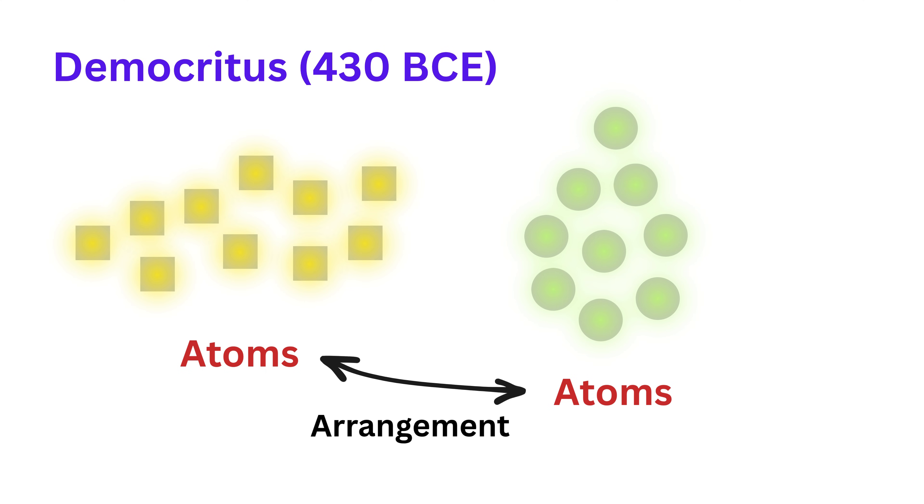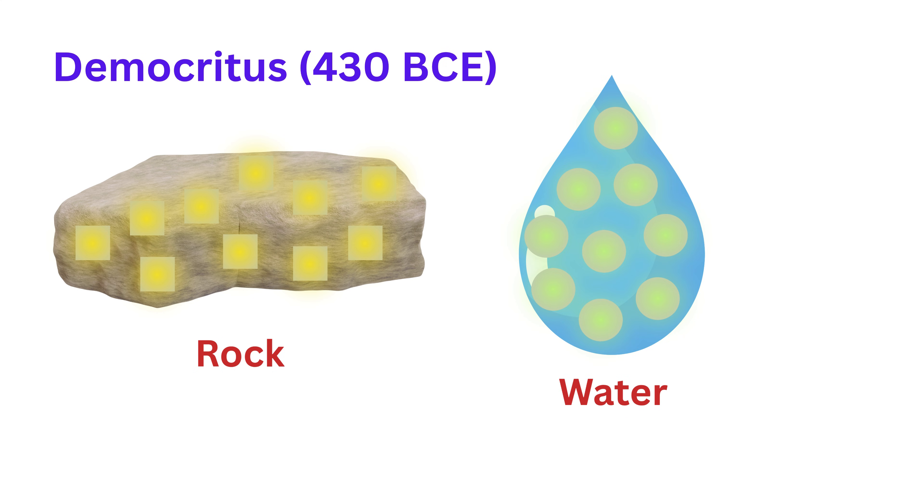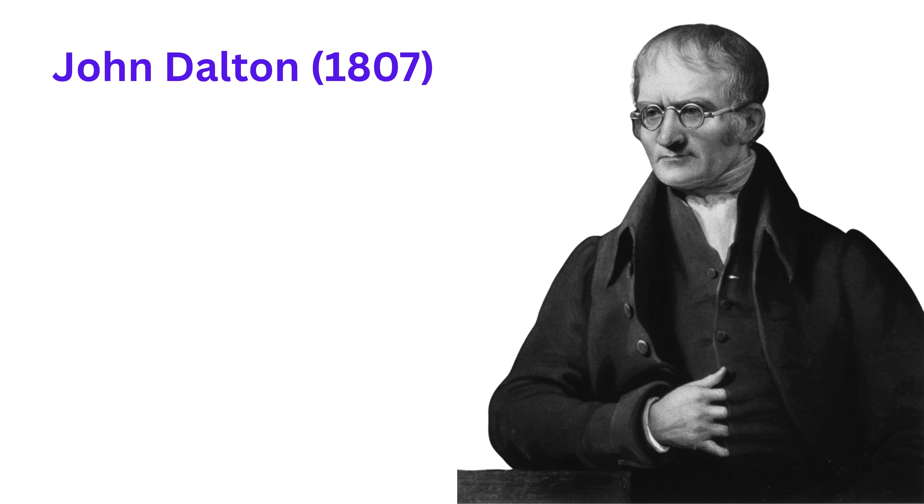So depending on how the atoms arrange themselves, you might get a rock or water or air. Centuries later, in the year 1807, a scientist named John Dalton took these ideas and gave them a scientific twist.